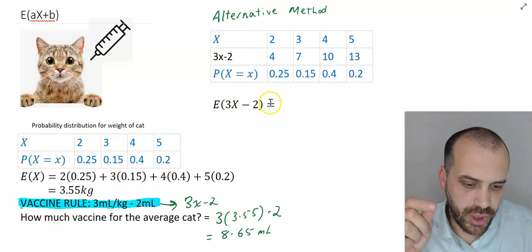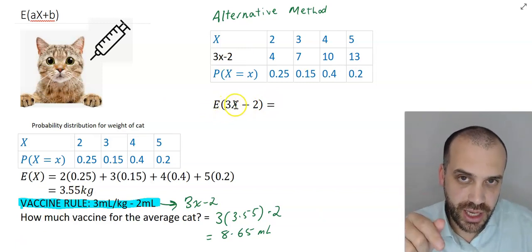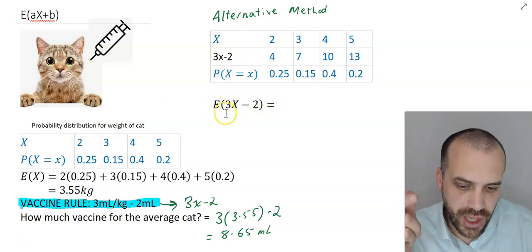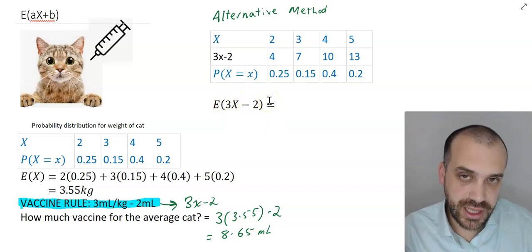So this E, 3x minus 2, it's the expected value of 3 times x, which is the weight, minus 2. And the whole thing, 3x minus 2, represents the amount of vaccine this cat's getting.